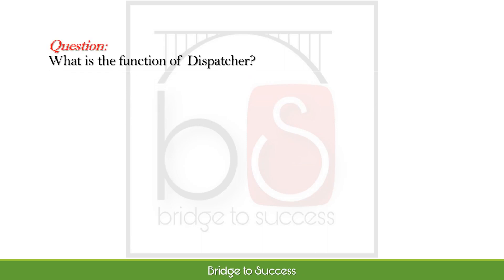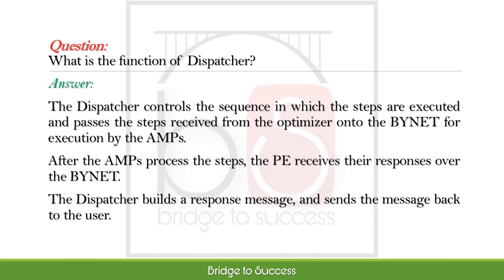What is the function of the dispatcher? The dispatcher controls the sequence in which the steps are executed and passes the steps received from the optimizer onto the Bynet for execution by the AMPs. After the AMPs process the steps, the PE receives their responses over the Bynet. The dispatcher then builds a response message and sends the message back to the user.